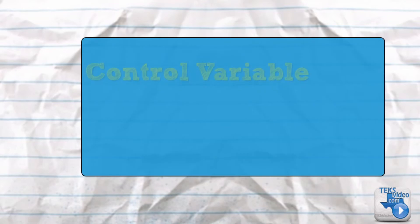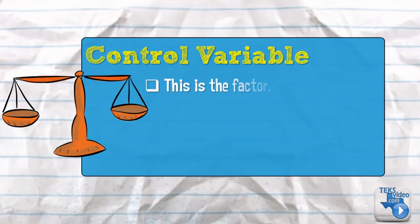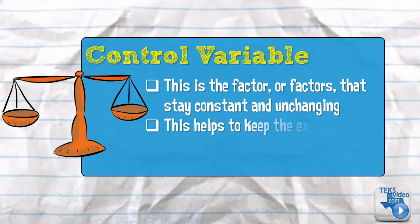A control variable is a factor or factors that stay constant and unchanging. This helps to keep the experiment fair.